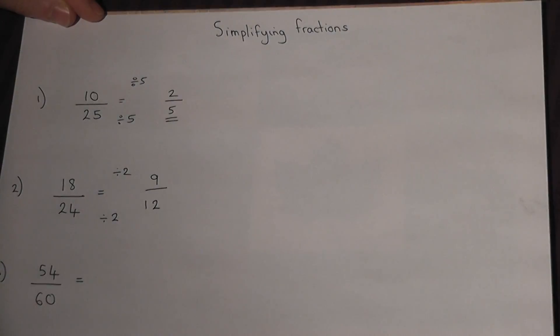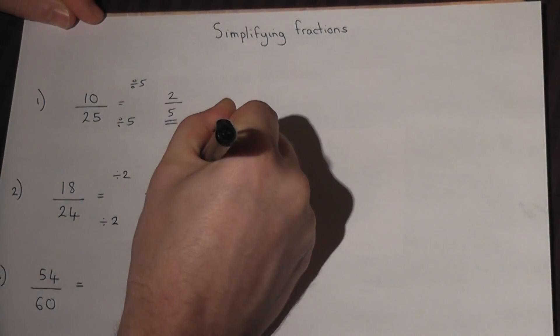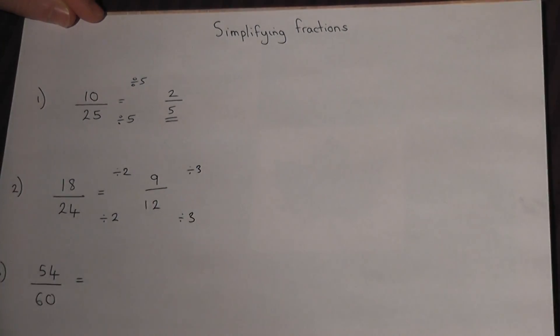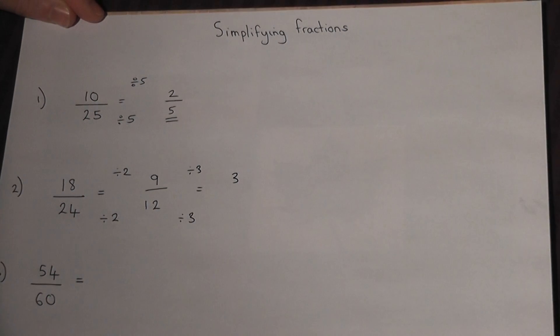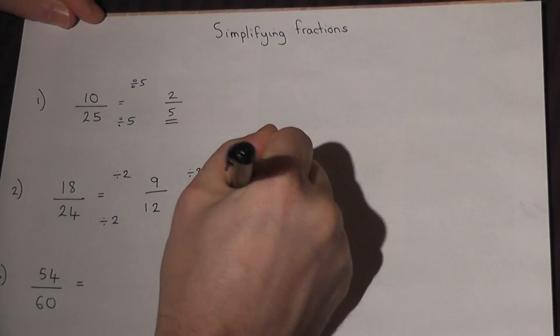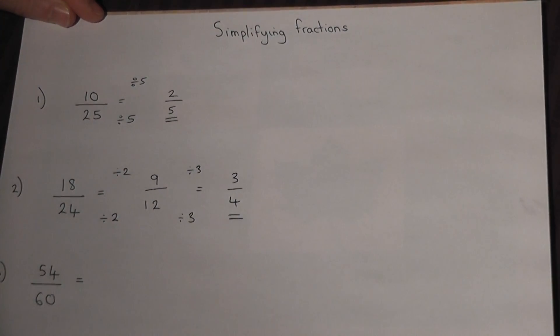Now we can go a bit further. Even though 9 and 12 are not even numbers, they both have 3 as a factor. They are both in the 3 times table, so 9 divided by 3 is 3, and 12 divided by 3 is 4. And 3 and 4 do not share any factor other than 1, so therefore we can go no further.